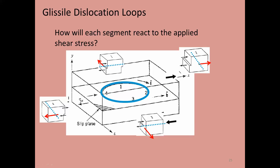The screw dislocation on the other side looks different because the Burgers vector and tangent line are opposite in sign — not surprisingly, it also wants to move outward from the middle of the loop. At points two and four, these are actually edge dislocations.